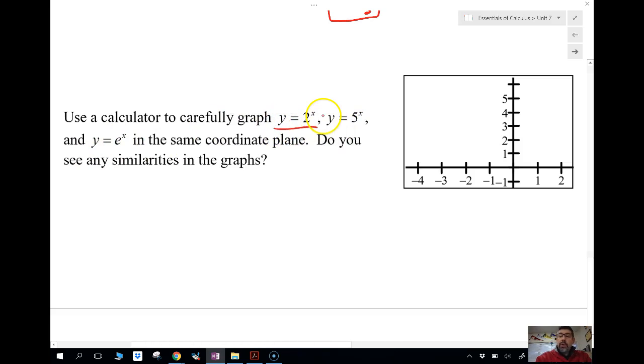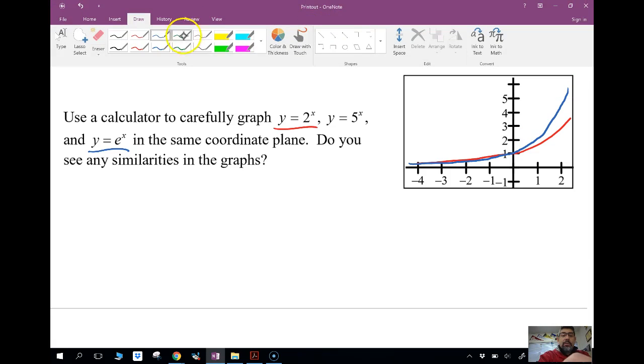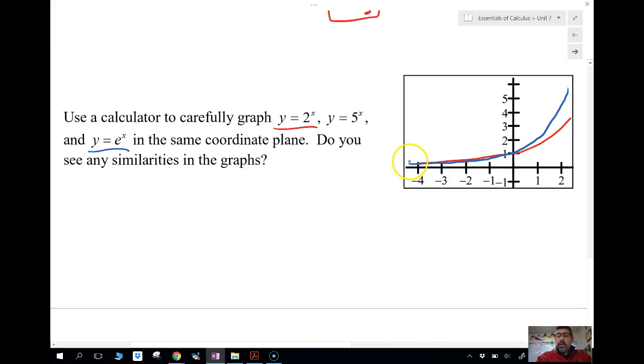So y equals 2x is going to look like this. Well, it really crosses at 1. y equals e to the x is, e is just a little bit bigger than 2. So they're actually going to have the same asymptote. They're going to cross to the same place, but it's going to increase a little bit faster. And then 5, well, 5 is bigger than 2 or e, so they're going to still have the same asymptote, still have the same y-intercept, but this is going to increase like that.